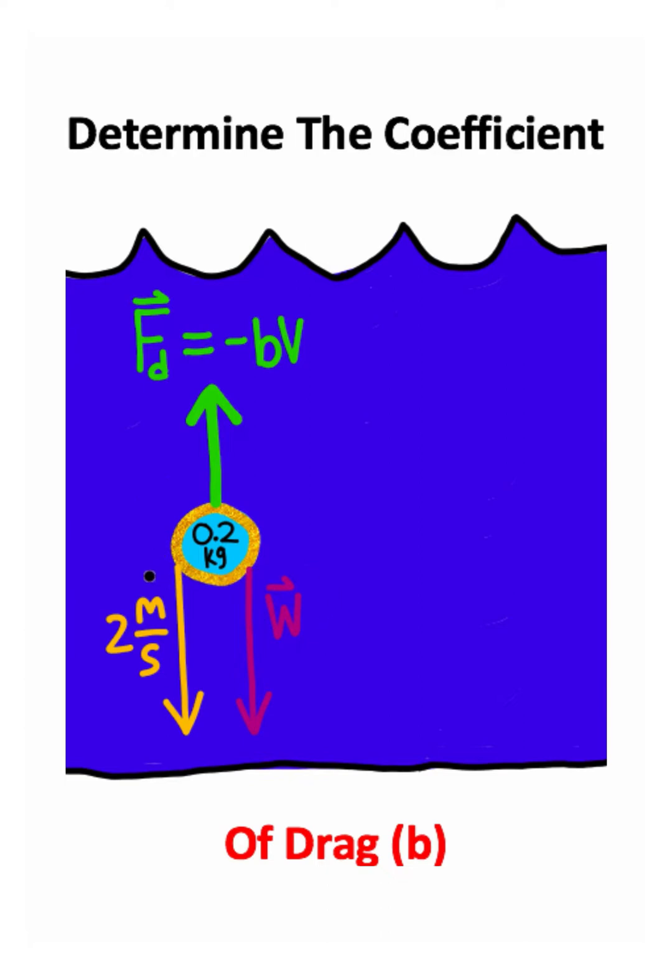Now I didn't really emphasize this in the problem, but I'm just going to say this is terminal velocity. There's a reason why it's important that it's terminal velocity. Because terminal velocity implies that the drag force and the weight force are equal because we're no longer accelerating downward.